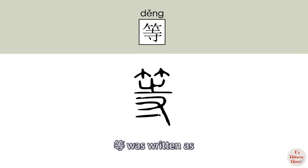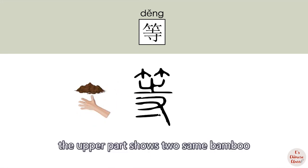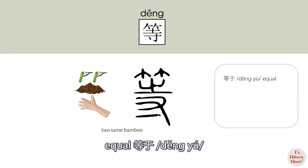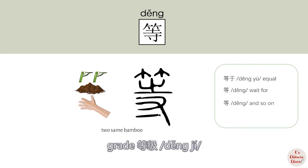In ancient times, 等 was written differently. The lower part shows a hand planting bamboo in the soil, and the upper part shows two identical bamboo. So the original meaning of 等 is 'equal' (等于). The extended meanings include: wait for (等), and so on (等), and grade (等级).